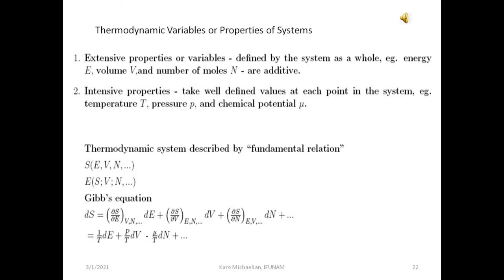We will discuss the thermodynamic variables or properties of a system — there are two kinds. The first are called extensive properties or variables, and these are defined by the system as a whole. For example: the energy E, the volume V, and the number of moles N. The total energy of the system is the sum of the energy in each of its parts; the same applies to the volume and the number of moles. These are additive variables.